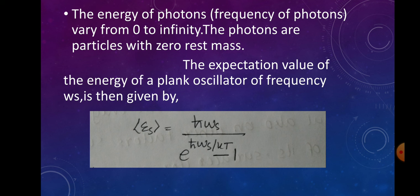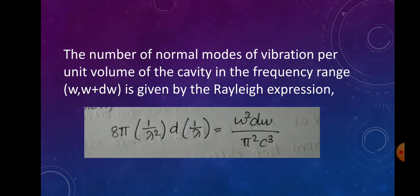The expectation value of the energy of the Planck oscillator follows from this. The number of normal modes of vibration per unit volume of the cavity in the frequency range ω to ω + dω is given by the Rayleigh expression: ω² dω / (π² c³).